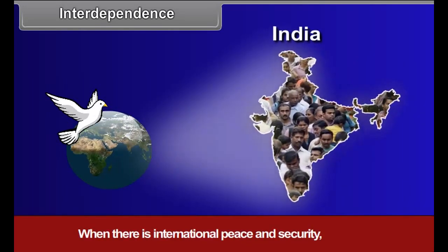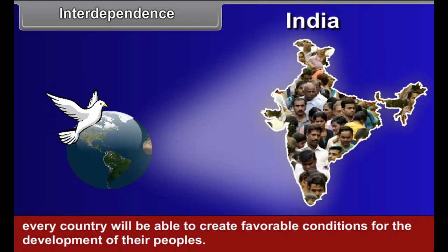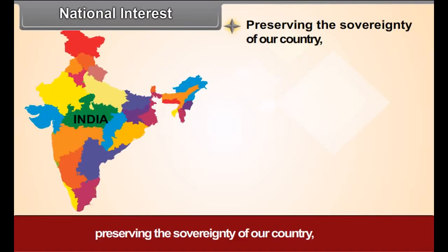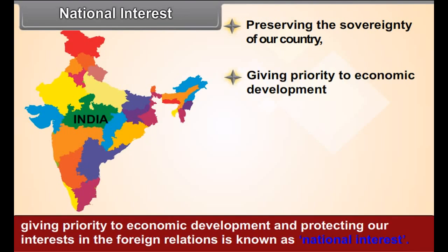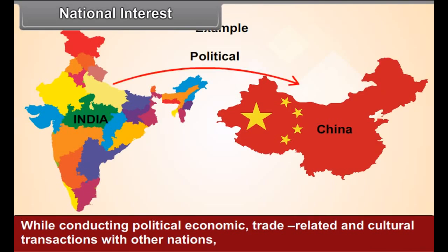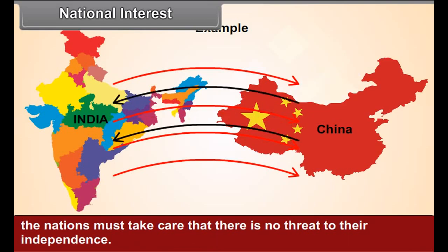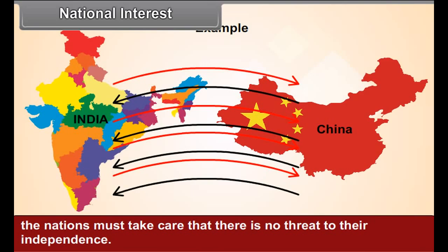When there is international peace and security, every country will be able to create favorable conditions for the development of their peoples. National Interest: Preserving the sovereignty of our country, giving priority to economic development, and protecting our interests in foreign relations is known as National Interest. While conducting political, economic, trade-related, and cultural transactions with other nations, the nations must take care that there is no threat to their independence.